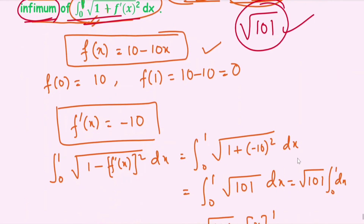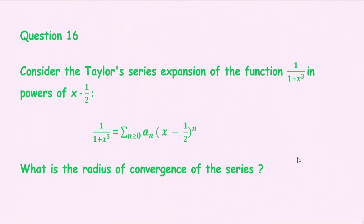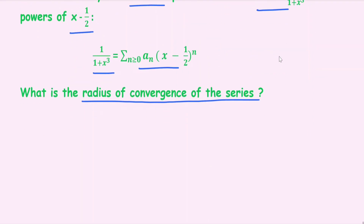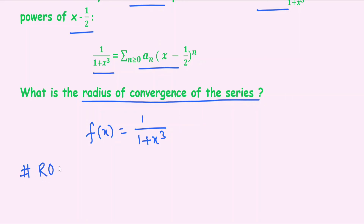Question number 16: consider the Taylor series expansion of the function 1/(1+x³) in powers of (x − 1/2), that is f(x) = 1/(1+x³) = Σ_{n≥0} aₙ(x − 1/2)ⁿ. What is the radius of convergence of this series? The definition of radius of convergence is: it is the distance between the point of expansion and the nearest singularity of the function.